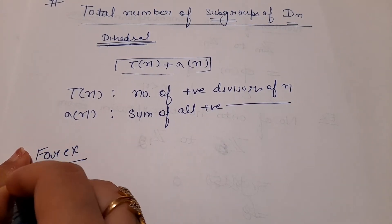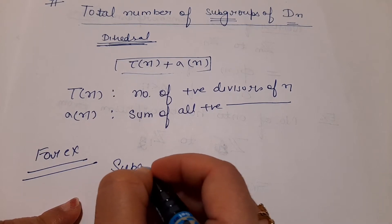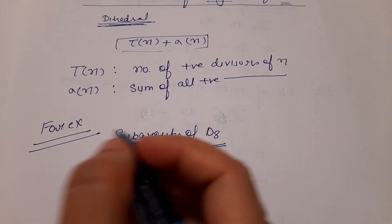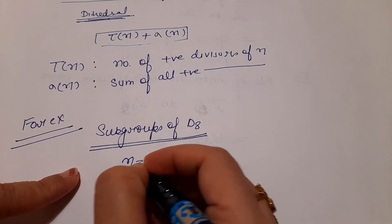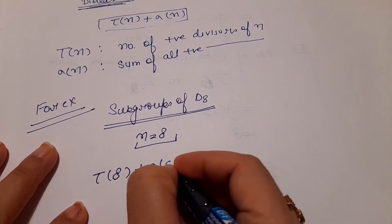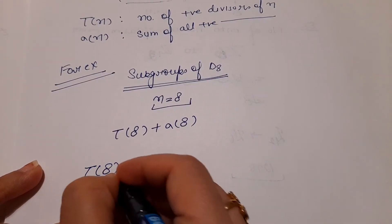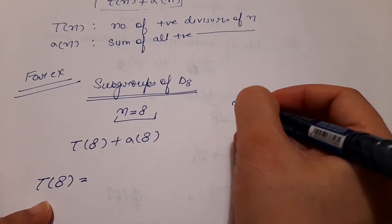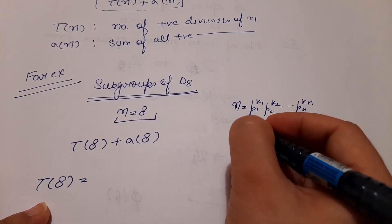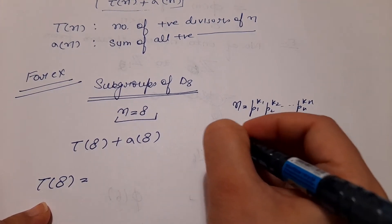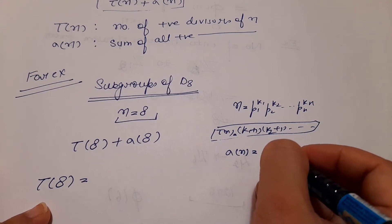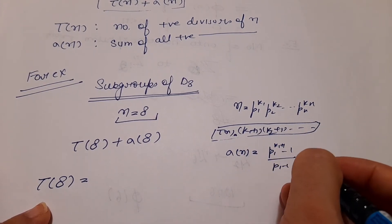For example, if we want to calculate the total number of subgroups of D8 — which includes both cyclic and non-cyclic subgroups — n is 8, so total number of subgroups equals τ(8) plus σ(8). Recall the formula: if n equals p1^k1 · p2^k2 · ... · pr^kr, then τ(n) equals (k1+1)(k2+1)...(kr+1), and σ(n) has its own product formula.